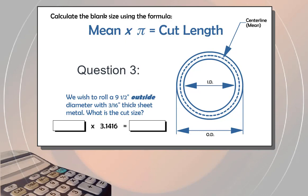Question 3. We wish to roll a 9½-inch outside diameter with 3/16-inch thick sheet metal. What is the cut size? The mean here is 9.312 and the answer is 29.251.